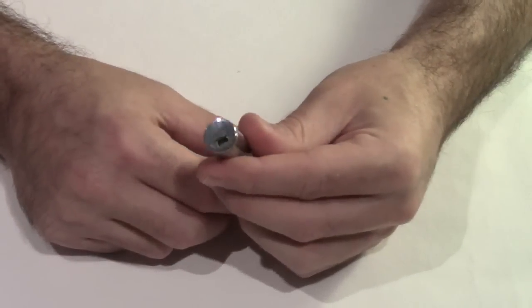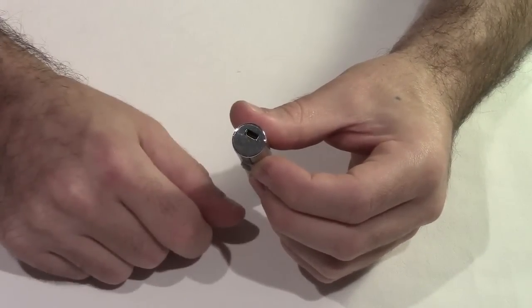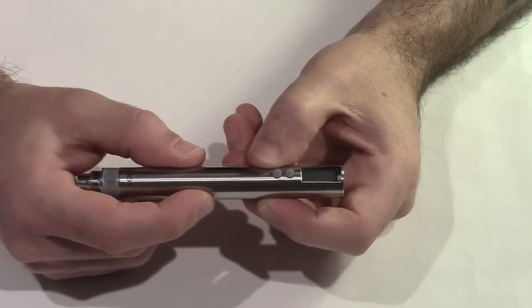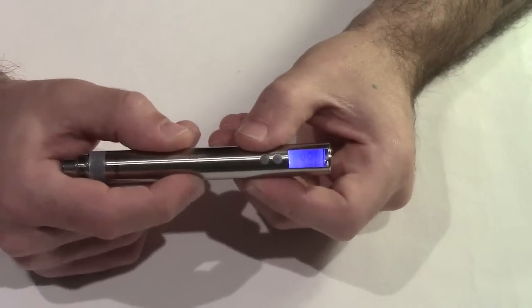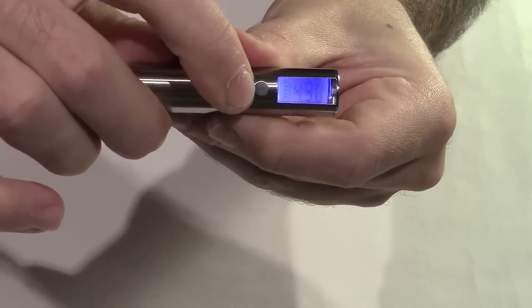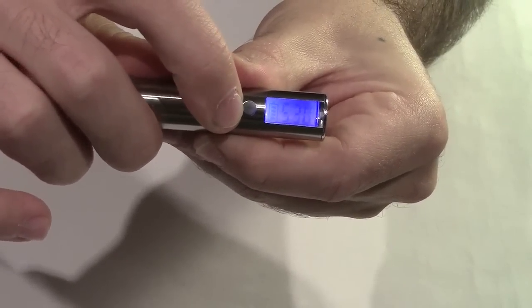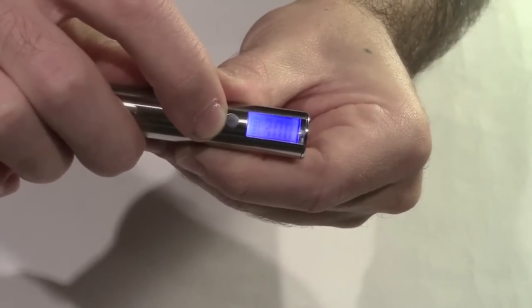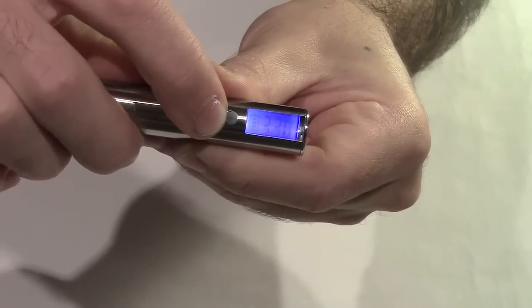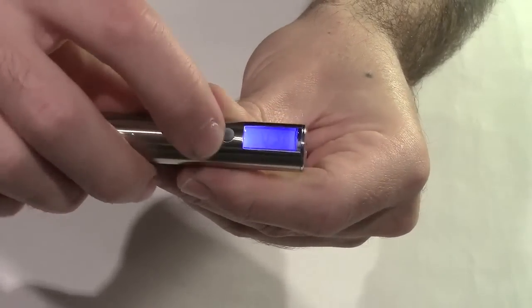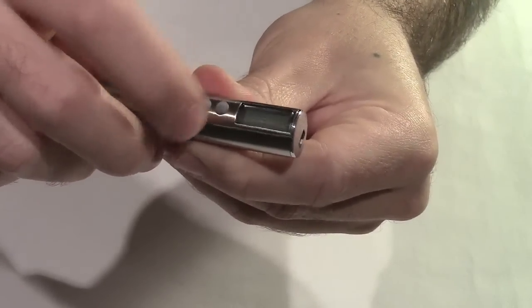Andiamo a vedere nello specifico la batteria. Come abbiamo appena finito di vedere c'è la presa mini USB sul fondo, abbiamo due tastini col più e il meno per poter alzare o abbassare il voltaggio. L'incremento è di 0.1 quindi 3.1, 3.2, 3.3, 3.4, 3.5, 3.7 e così via. Io la lascio su 4.2. Col meno possiamo fare la stessa cosa, abbassare e andare a diminuire il voltaggio.